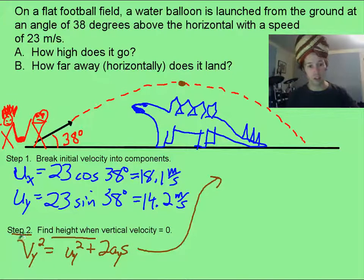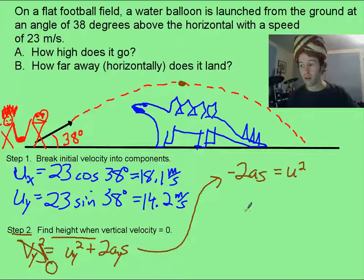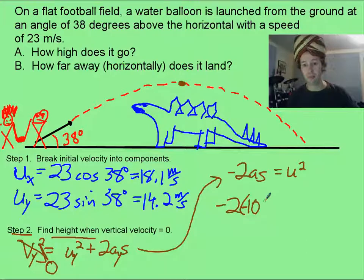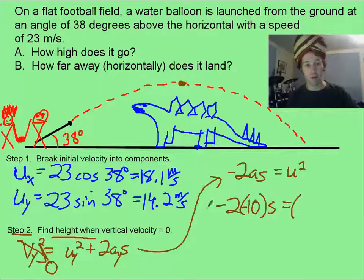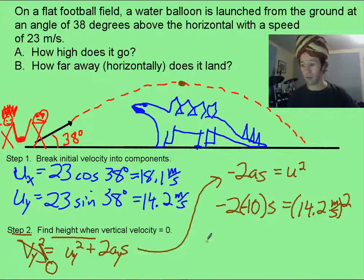I am then going to say that this is going to be cancelled out, because it's zero. And then I can rearrange this to be negative 2as equals u squared, and that's going to become negative 2 times my negative 10 meters per second squared acceleration. So s is going to equal my vertical initial velocity of 14.2 meters per second, and that is squared. Then it's just a matter of solving for s, and I end up with about 10 meters is the height that it goes.